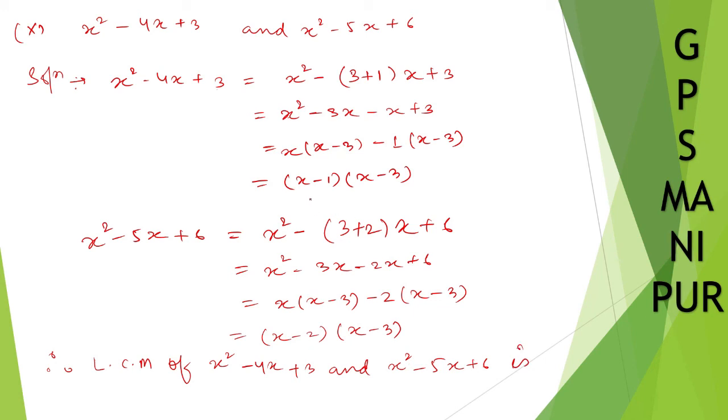So LCM will be x minus 1. I cannot take common, so write down x minus 1. Let me start from here, x minus 1. So x minus 3 and x minus 3, I can take common. X minus 1, x minus 2, I cannot take common, so write down x minus 2. And x minus 3, I can take common from both, so x minus 3.